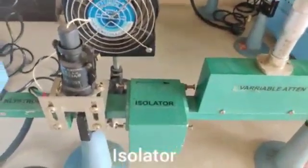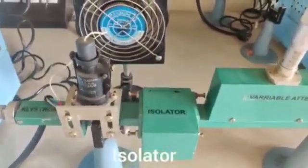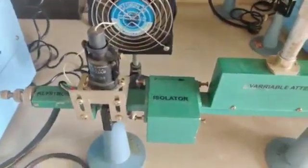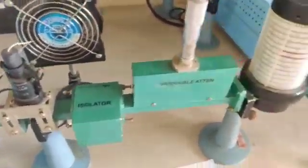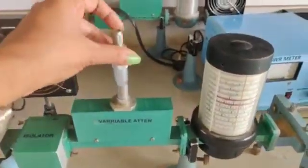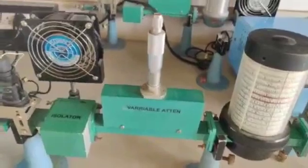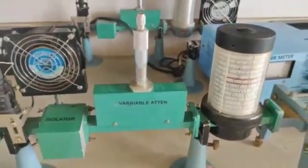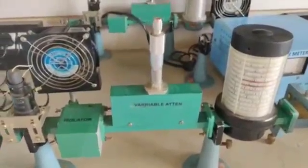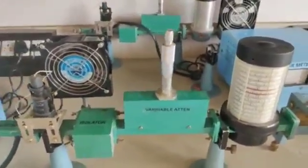Next device is isolator, which makes the microwave signal pass in the forward direction and avoids back reflection of the signal. Next one is variable attenuator. Here we can keep it to 15, and this is a screw gauge adjustment. The required attenuation is given by the user as needed for the experiment.